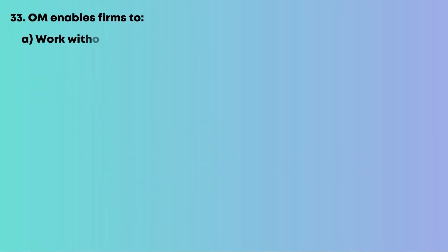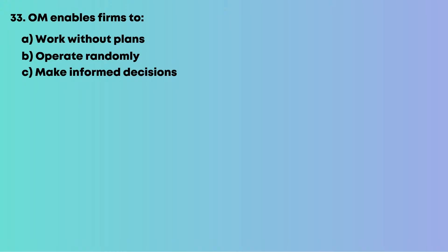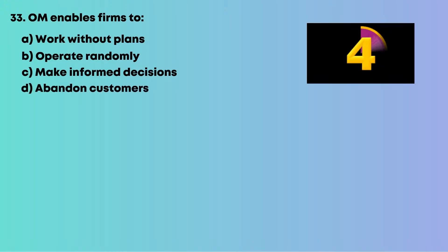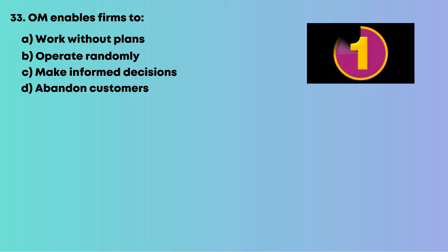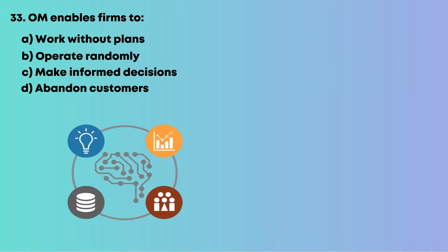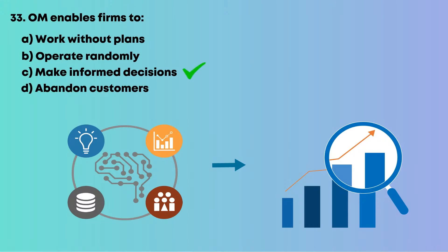Question 33: Operations management enables firms to: A, work without plans; B, operate randomly; C, make informed decisions; D, abandon customers. Data-based decisions improve performance. The right answer is C, make informed decisions.